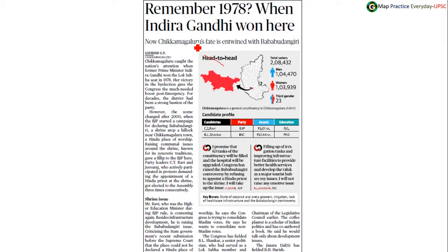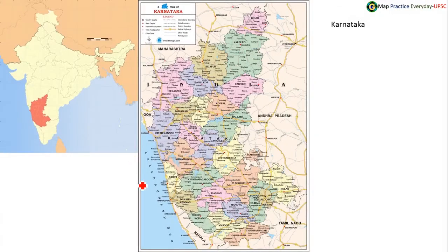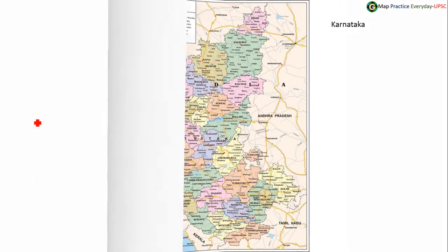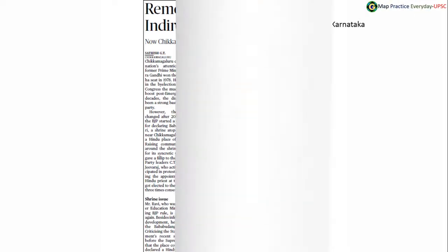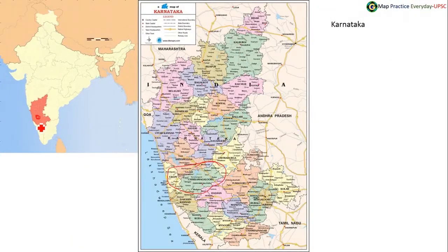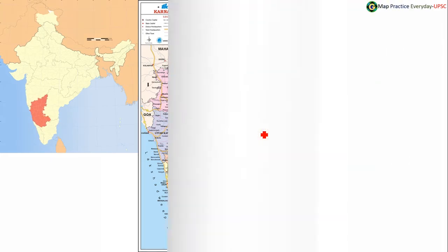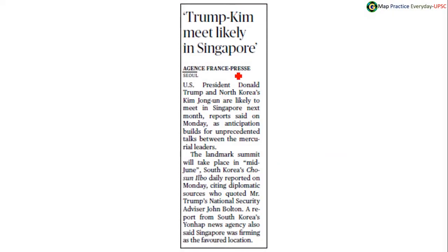The news is from Chikmagalur district of Karnataka, where Indira Gandhi won her MP election in 1978. Chikmagalur is a district in Karnataka, located over here in this part of India. In the map of India, Chikmagalur district is located somewhere here in Karnataka.